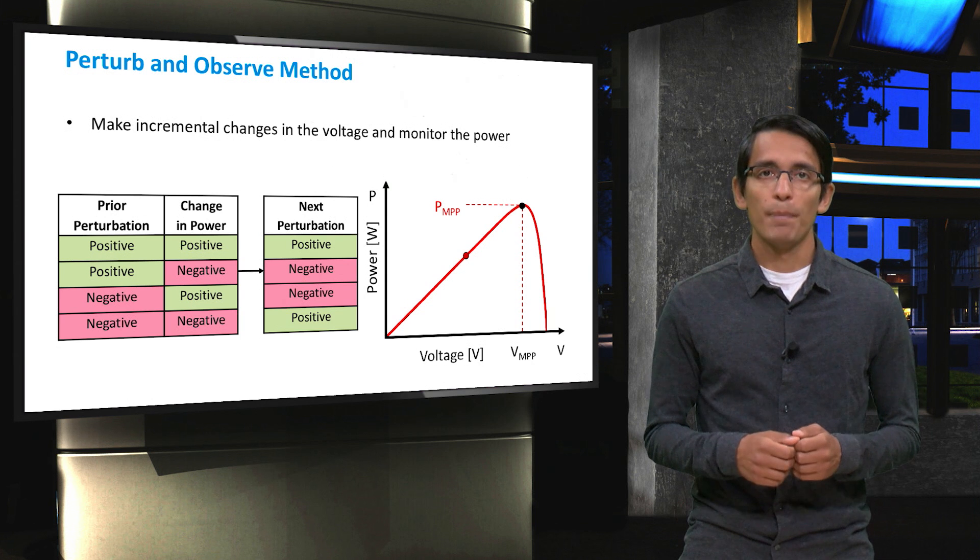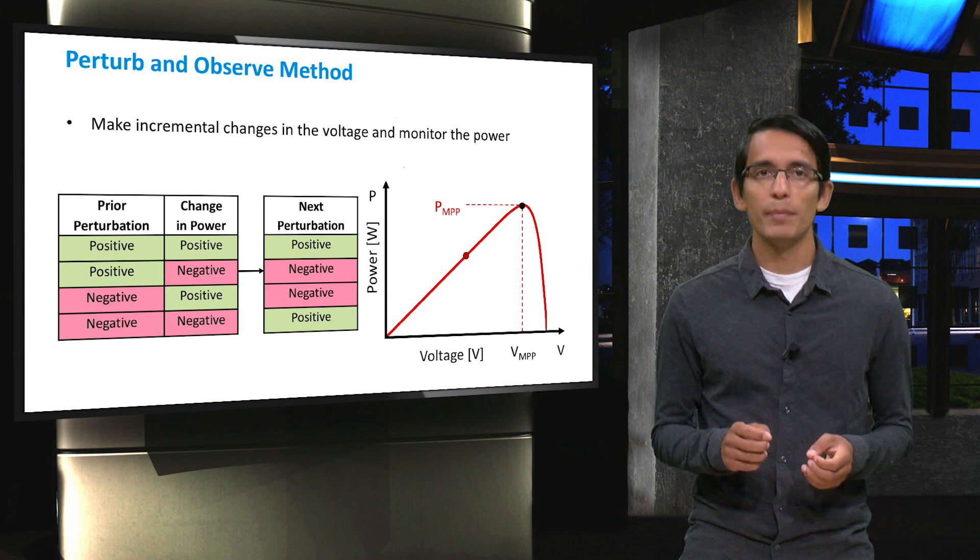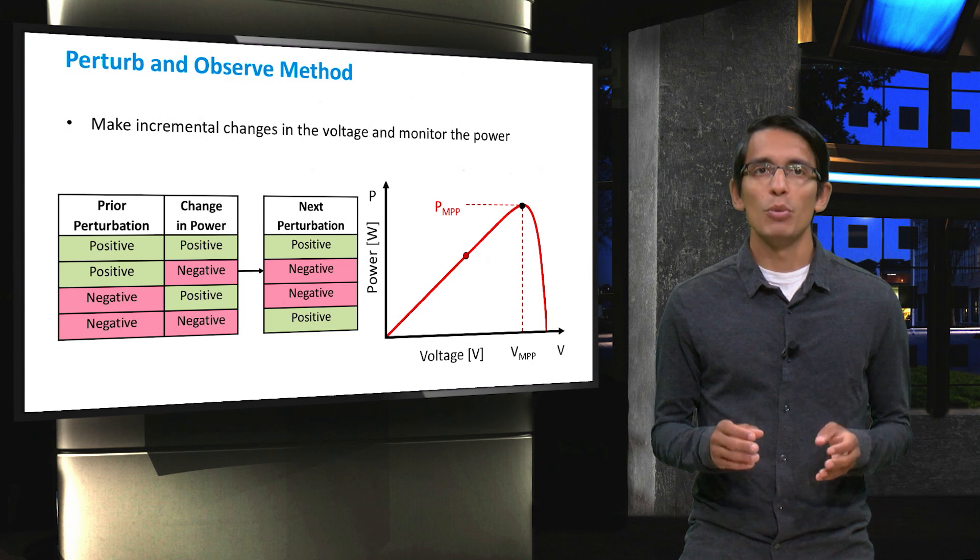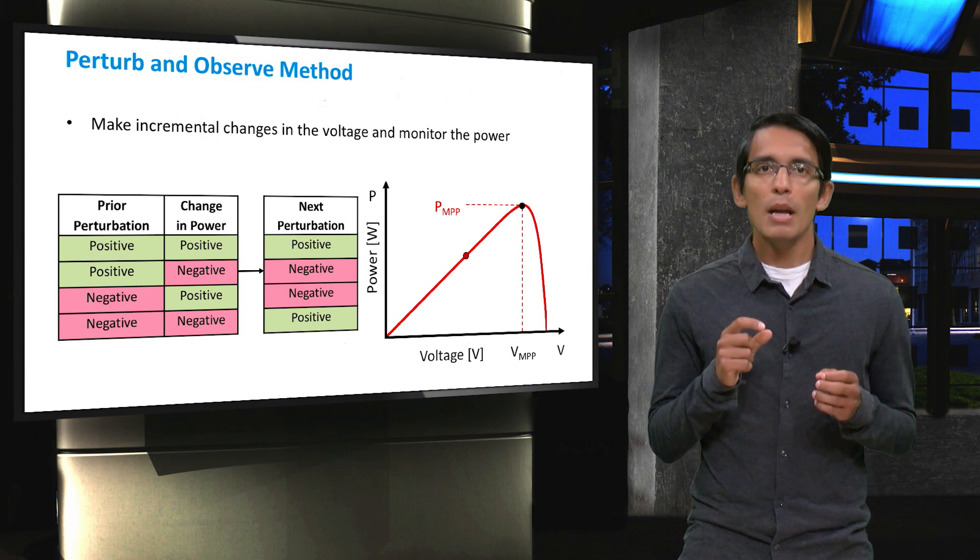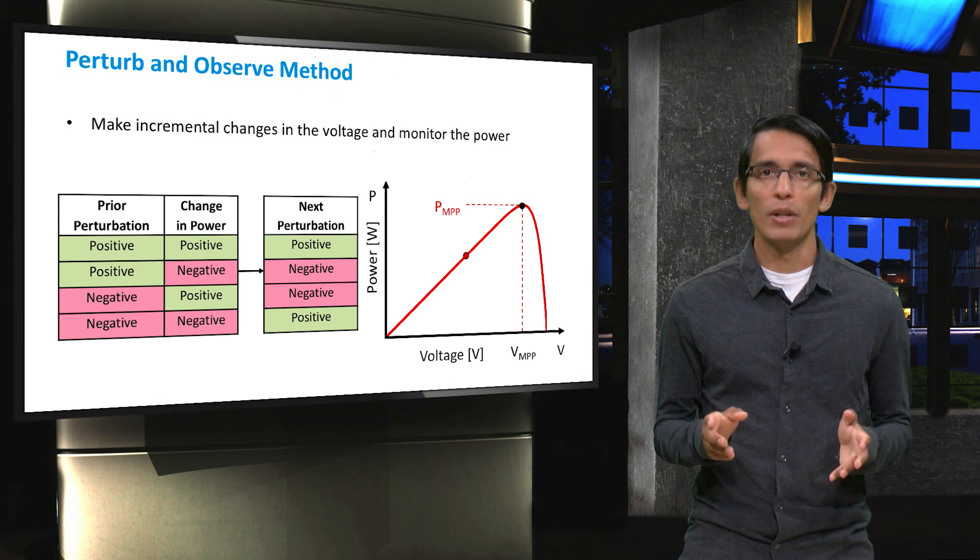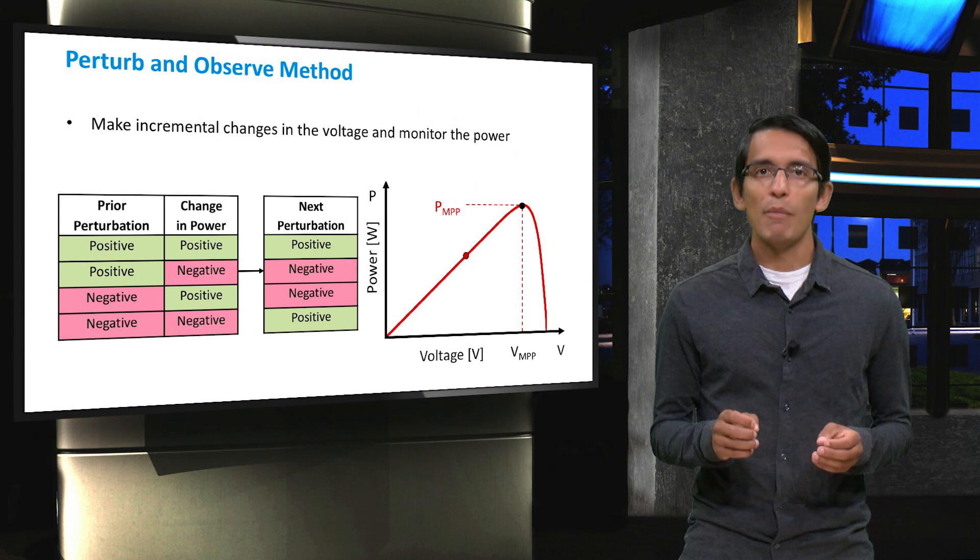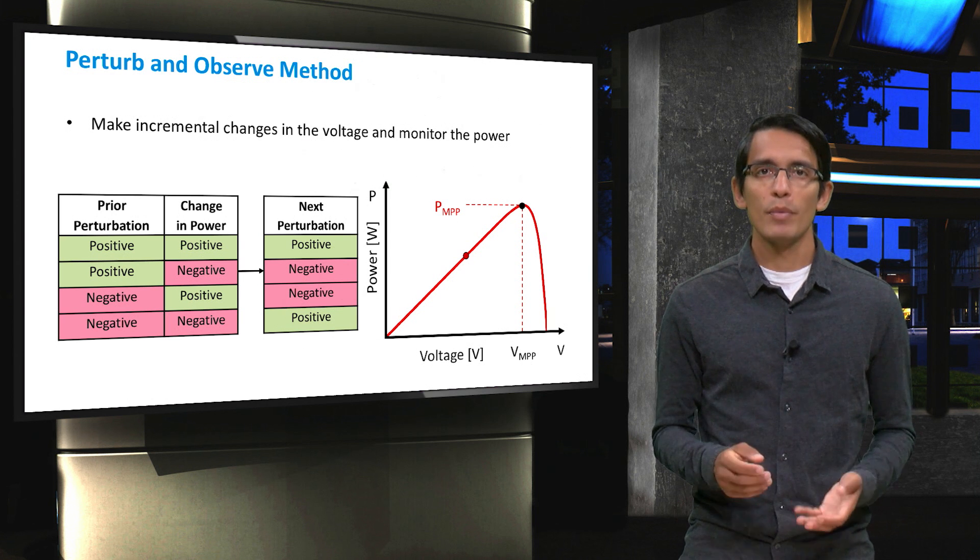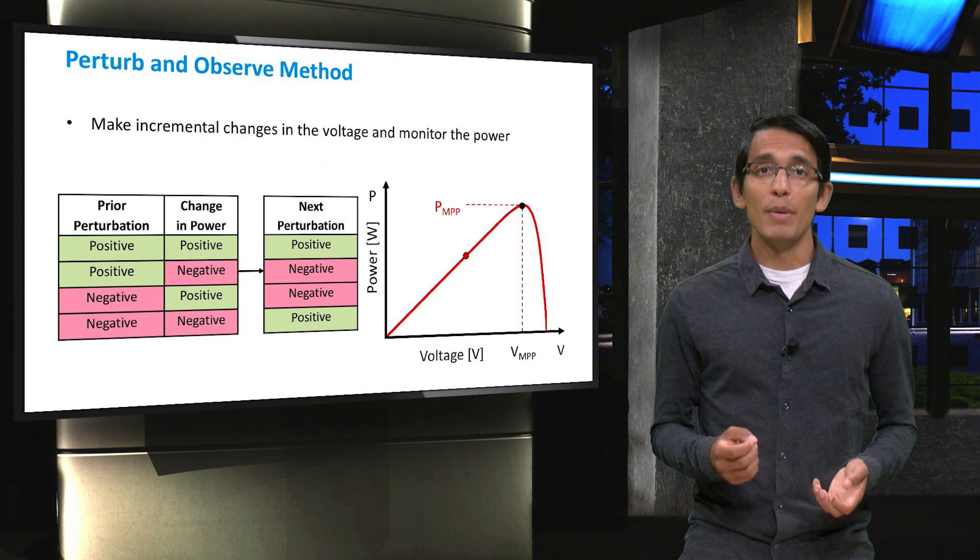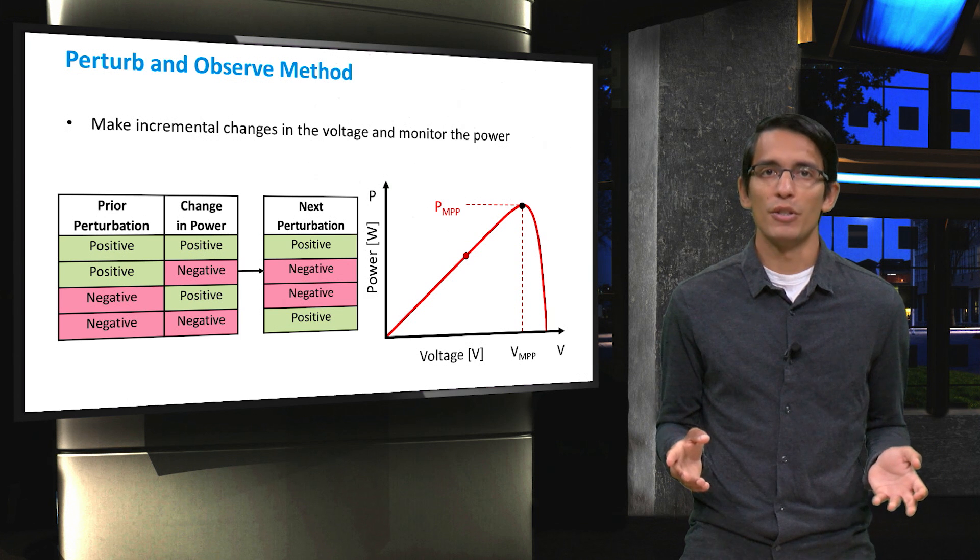Let's take a look at how this would work. It should be noted that the perturbations used here are exaggerated. Usually, the perturbations would be much smaller. But here we have a normal power voltage or PV curve of a solar cell. Let's assume we are operating at the red dot and we want to find the maximum power point. Well, our first perturbation would be random since we don't have any information. So let's just choose a positive voltage perturbation to start.